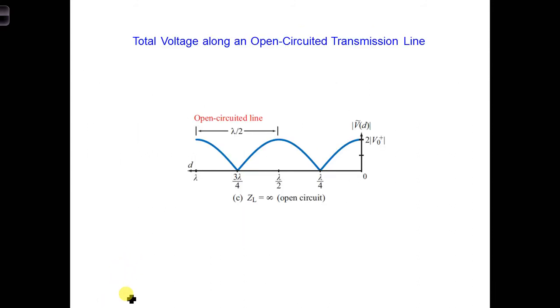Putting all these results together, here you can see the variation of the total voltage magnitude versus distance from the open circuit load. As calculated earlier, the voltage reaches a maximum at the load, and also again at lambda over 2. It reaches a minimum of 0 at lambda over 4.